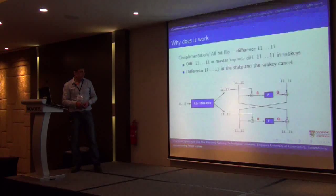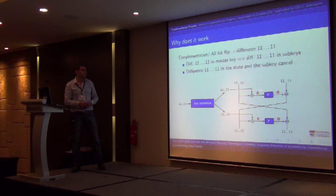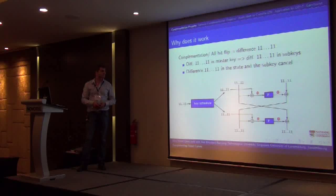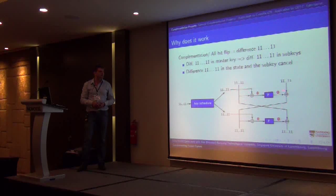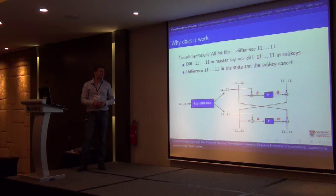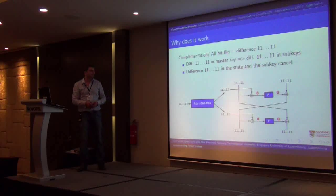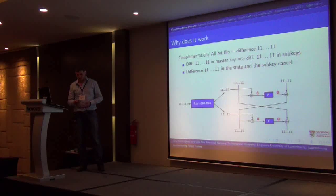This doesn't have to be only DES. Basically, this is applicable to any Feistel cipher such that the round function first has the XOR of the sub-key and then some transformations — first XOR, then some transformations — and the sub-keys of the key schedule are actually permutations of the bits of the master key.